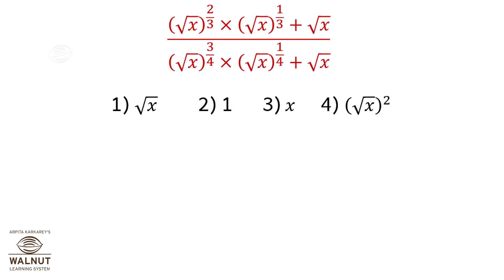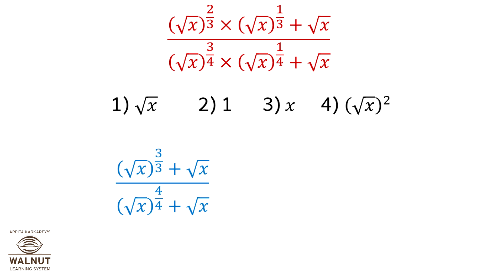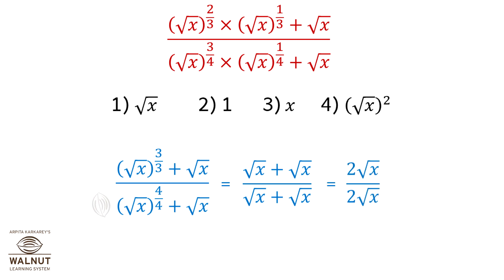Square root of x raised to 2 upon 3, multiplied by square root of x raised to 1 upon 3 plus square root x, divided by square root of x raised to 3 upon 4, multiplied by square root of x raised to 1 upon 4 plus square root x. This simplifies to square root of x plus square root of x, divided by square root of x plus square root of x, which equals 2 times square root of x, divided by 2 times square root of x, which is equal to 1.